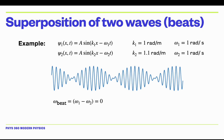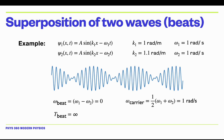We can do the same for the temporal part. The beat frequency is the difference between the angular frequencies. Since they're both 1, that gives zero. The temporal period of those beats is 1 over 0, so it's infinite — the wave is not actually beating in time, it's steady. The carrier frequency is the average of omega1 and omega2, which is 1 radian per second, and the corresponding period is 2-pi over 1, or 6.28 seconds.